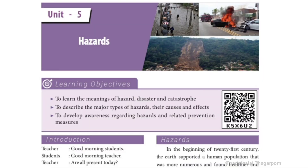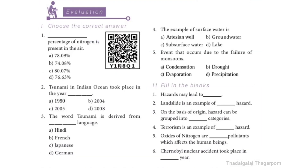8th Standard Social, Geography, Unit 5: Hazards. Book Back Exercise Roman No. 1 - Choose the correct answer.